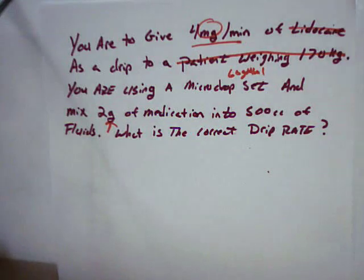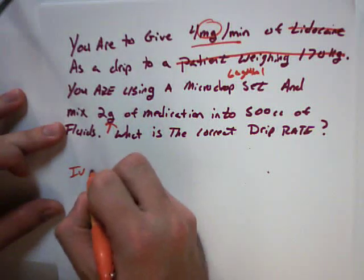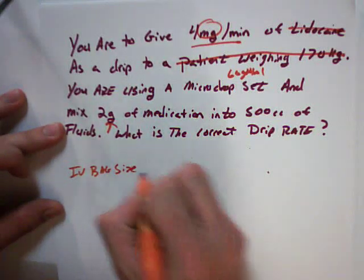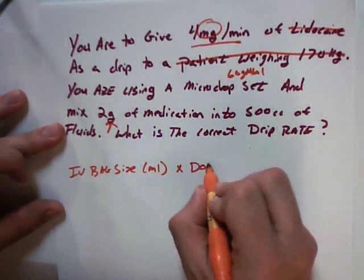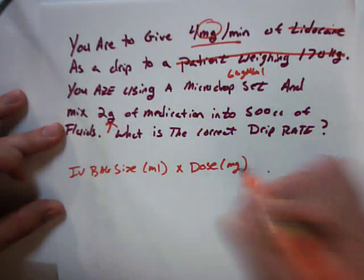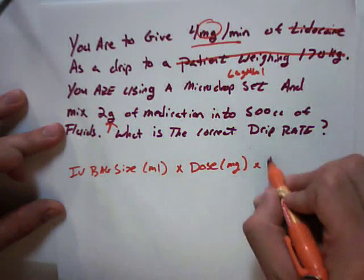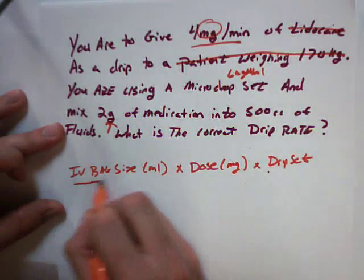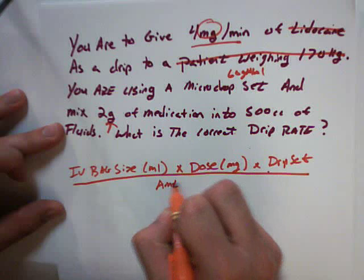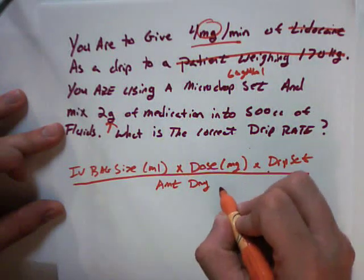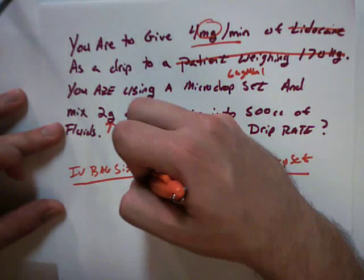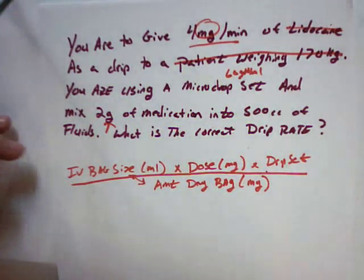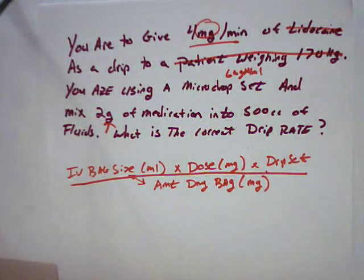Well, first thing you have to know is the formula. This formula is pretty simple. What you have to know is the IV bag size in milliliters. We're going to multiply that by the dose that's ordered in milligrams. Then we're going to multiply that by the drip set. We're going to put all of that over the amount of drug in the bag, expressed again in milligrams. So these two right here kind of work together. So what do we got from here? Well, let's fill in this equation to see where it takes us.